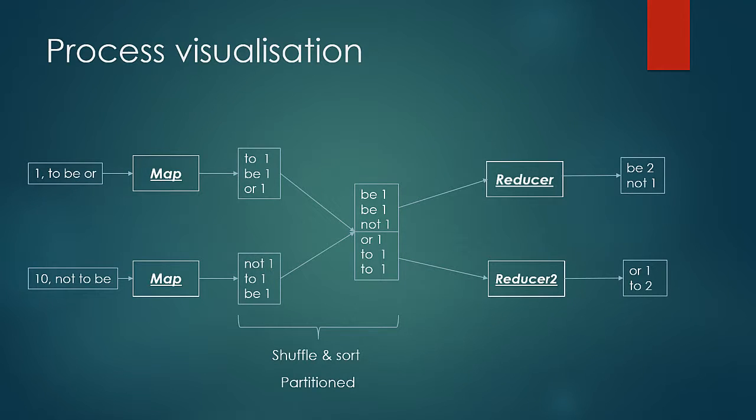Please note that single reducer outputs single sorted file while two reducers output two individually sorted files.